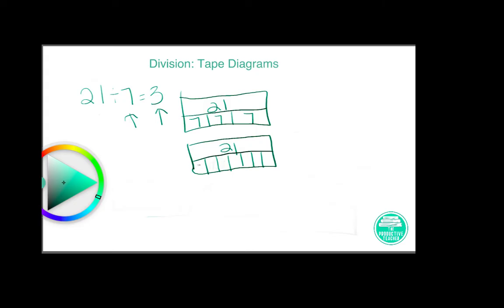And then in this case I would put a 3 in each box. So either one of these models could be used to illustrate this division problem, and that's how you make a tape diagram to model a division equation.